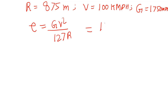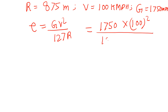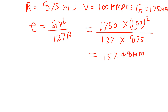Putting all values into the equation: G is 1750 mm, velocity is 100 kmph squared, divided by 127 into R which is 875. Solving this gives 157.48 mm. Since the question asks to round off to one decimal place, the correct answer is 157.5 mm.